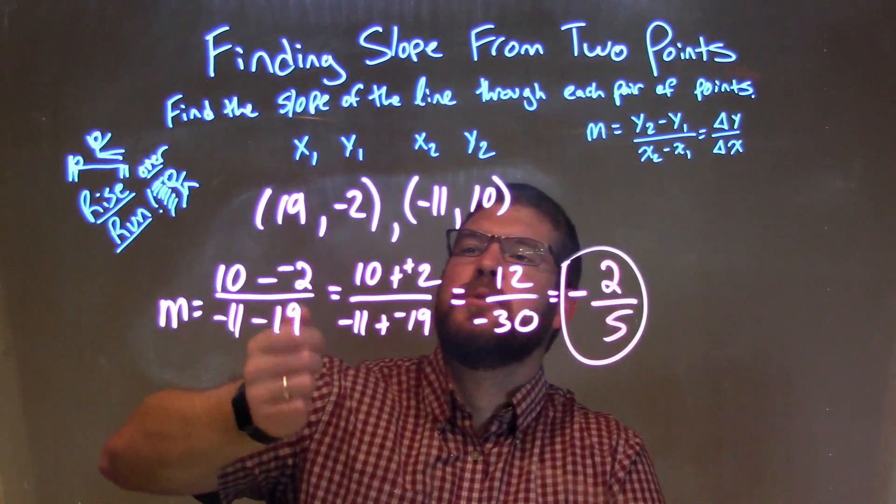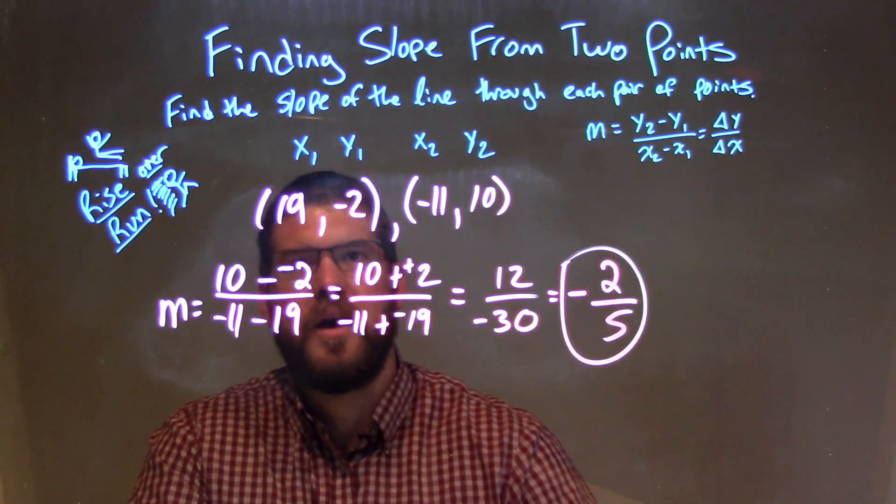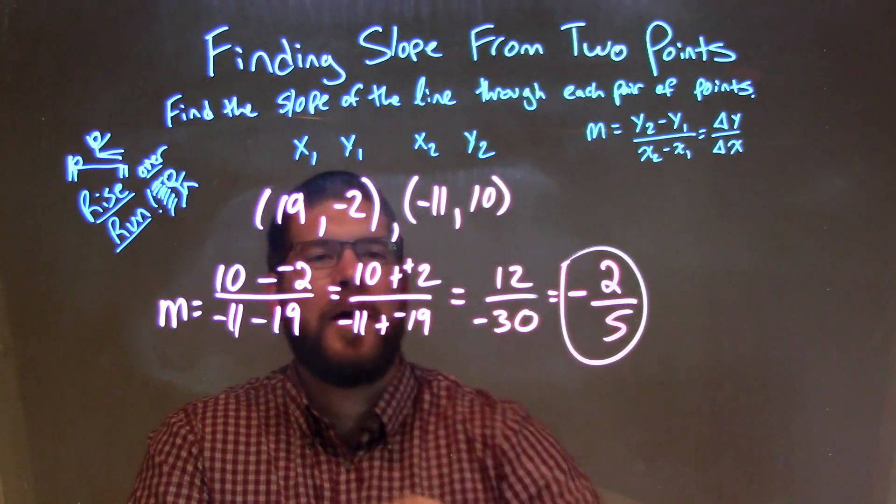So let's recap. We're given our two points, 19 and negative 2, and negative 11 and 10. Our x1, y1, x2, y2 respectively.